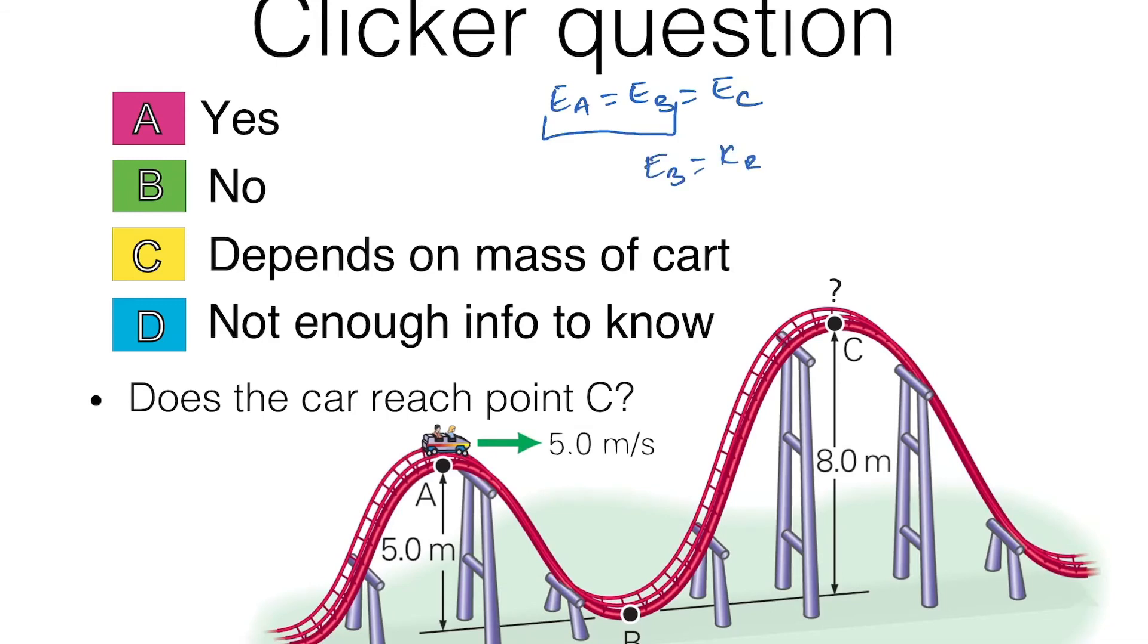So energy at B is just the kinetic energy at B, which is one half mvB squared. We know this, so I'm going to give the mass of the car to be 100 kilograms. Giving that value, I get energy to be 6150 joules, which is 6.15 times 10 to the power 3 joules.